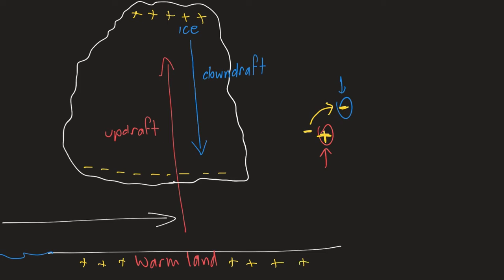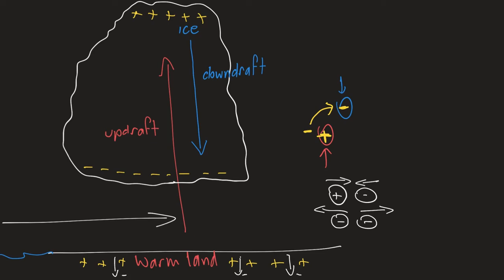Why does the ground become positive? It's because like charges repel. If we've got a positive and a negative, they're going to be attracted to each other — opposite charges attract, but like charges repel. This heavily negative area at the bottom of the cloud pushes the electrons in the ground downward, so the top of the ground becomes positive. We've got a charge separation between the bottom of the cloud and the ground.